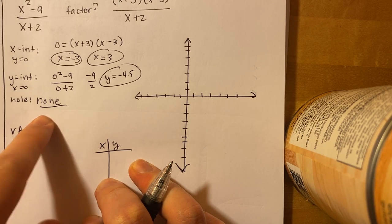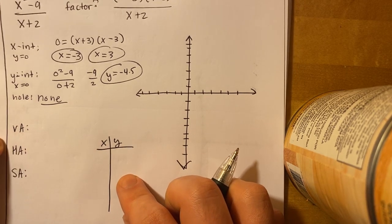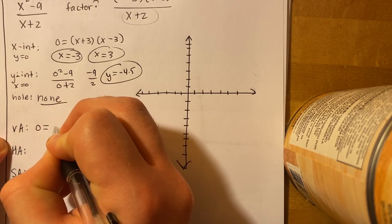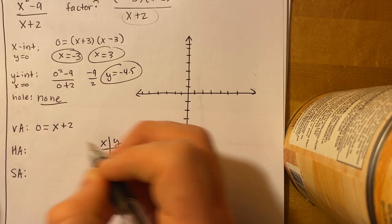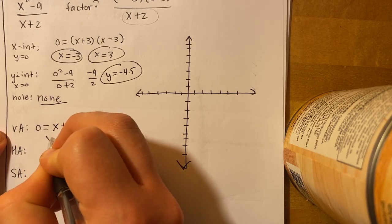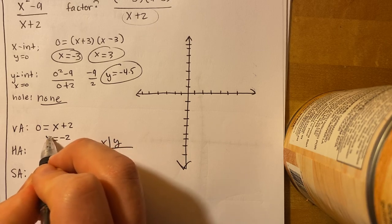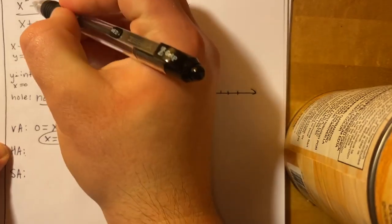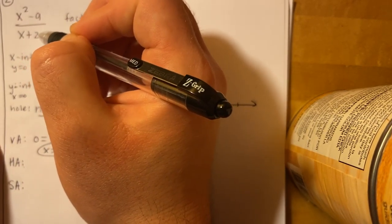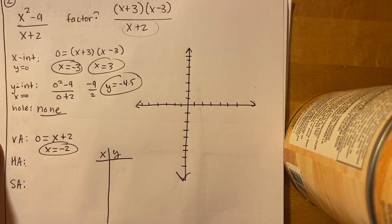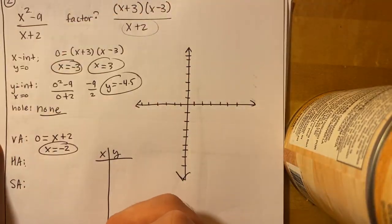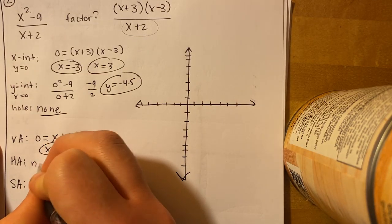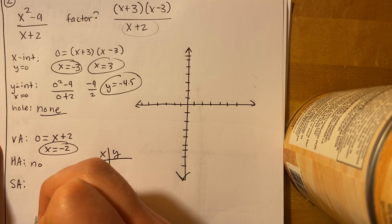There are no holes, and we have one vertical asymptote: set (x + 2) equal to zero, giving x equals negative 2. For the horizontal asymptote, we compare degrees: the numerator has degree 2 and the denominator has degree 1, so the numerator degree is greater. That means there's no horizontal asymptote, but there is a slant asymptote.